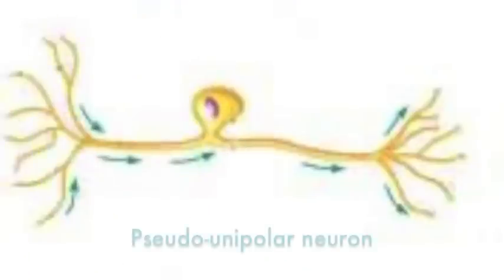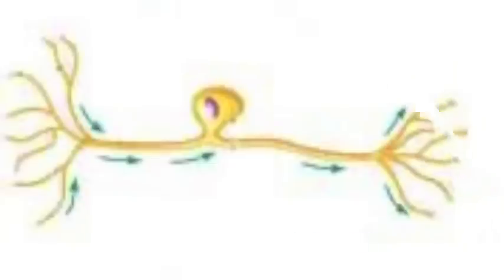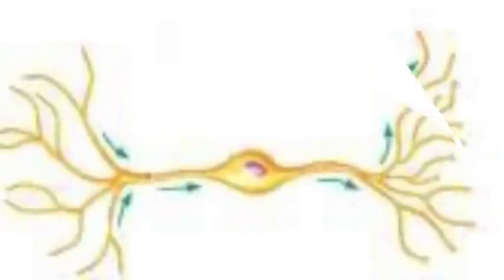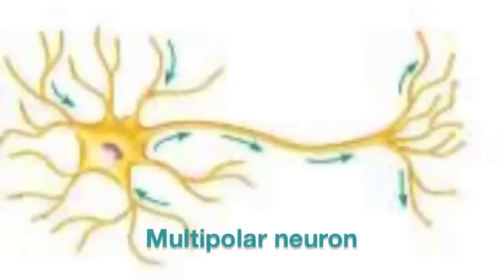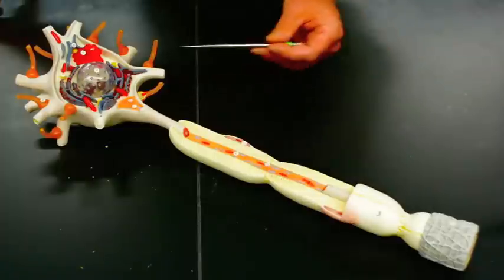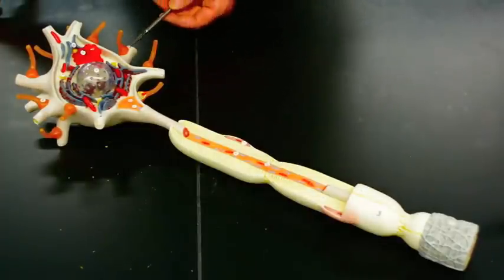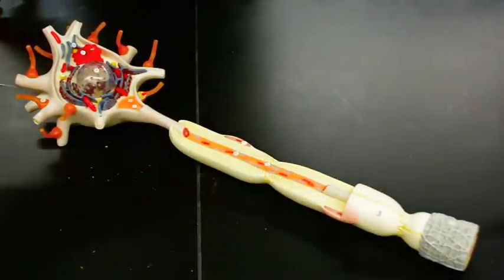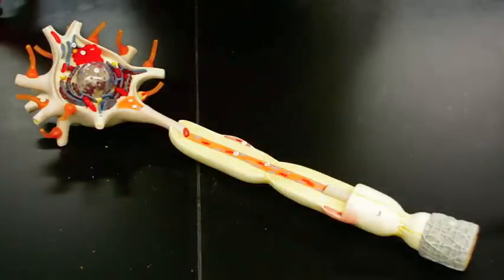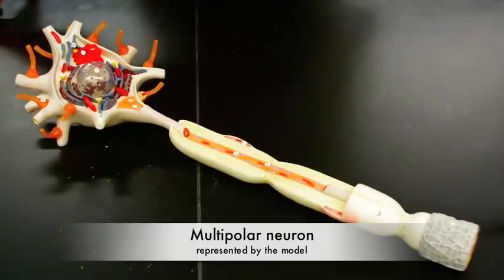A pseudo-unipolar neuron has just one process that goes both in and out of the cell body. A bipolar neuron has two processes, and a multipolar neuron has many processes. As we can see, we have our cell body, one long process, and numerous other processes coming out of or going into the cell body — so this is a multipolar neuron.